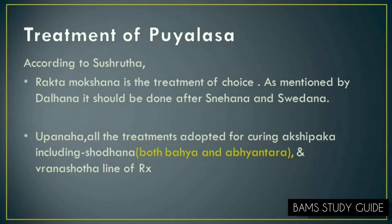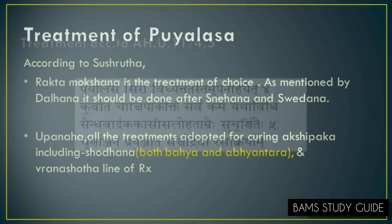Vrana Shodha Chikitsa involves two stages. In the first stage, Vimla Pana should be done — that is, firmly pressing and squeezing by thumb — which will help for early separation. This should be done after Snehana and Svedhana of the affected part. In the next stage, Akshi Paka Chikitsa should be followed.